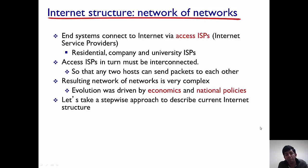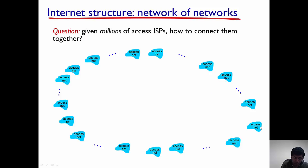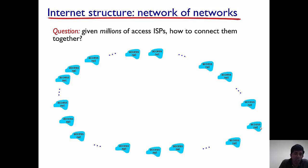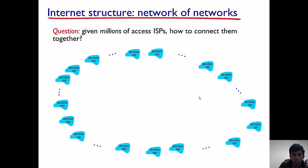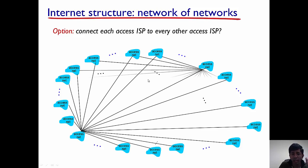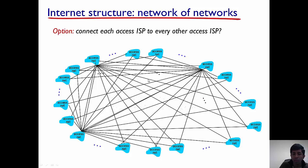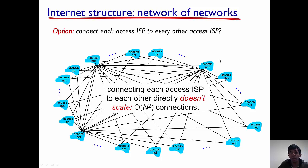Let's take a step-by-step approach to understand how the internet has evolved. There are millions of access ISPs all over the world, and these access ISPs have to be able to send packets to each other. One way to connect all these ISPs is to connect each ISP to every other ISP in the world, but as you can see in the figure, this results in a large number of connections.